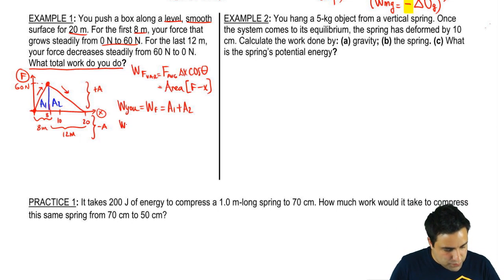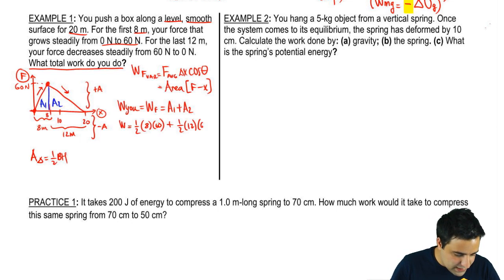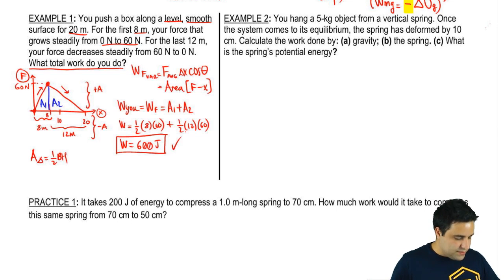So if I were to find this, work would be, remember the area of a triangle is half bh. So here it's half, the base is 8, and the height is 60, plus half for the second part. The base is 12, and the height is 60. And when you do all this, you get 600 joules. That's the amount of work that we did here. All right? Let's go into the next one.